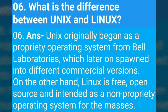What is the difference between Unix and Linux? Unix originally began as a proprietary operating system from Bell Laboratories, which later spawned into different commercial versions. On the other hand, Linux is free, open source, and intended as a non-proprietary operating system for the masses.